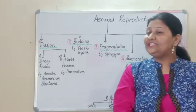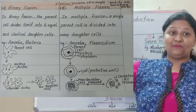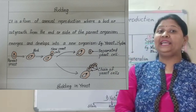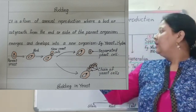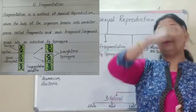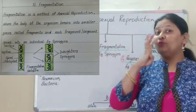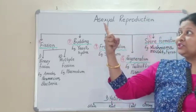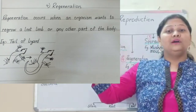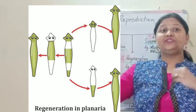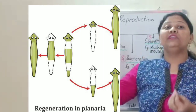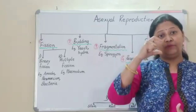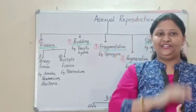So today we have studied fission — binary and multiple fission, as seen in picture number one. Then budding, as seen in yeast in picture number two. Fragmentation, where each fragment develops into an organism in spirogyra. The fourth type is regeneration — where loss of a limb or body part can regenerate, like the tail of a lizard. In some organisms like planaria, the regenerative power is so strong that a part can develop into a whole organism.